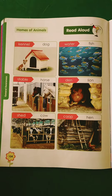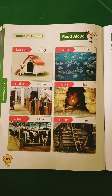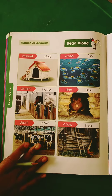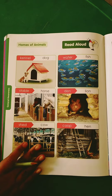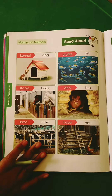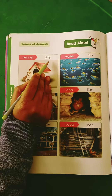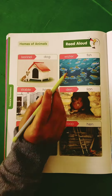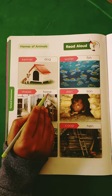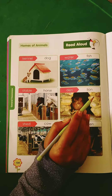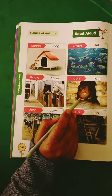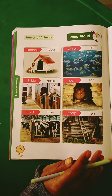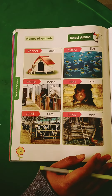So you have to learn all the names of the homes of animals. This means whatever you have been given, you have to learn all the names of the homes of animals.